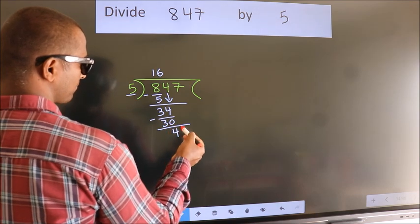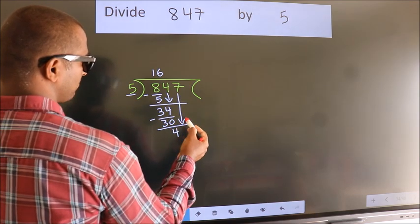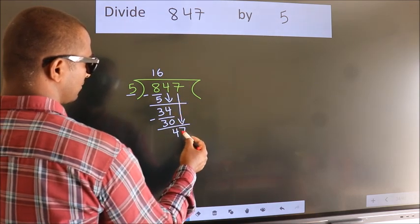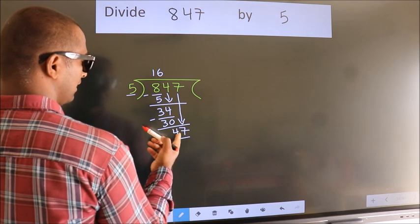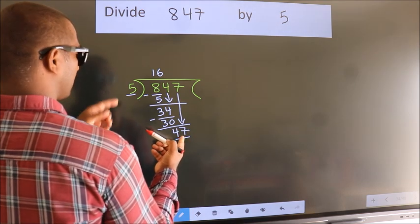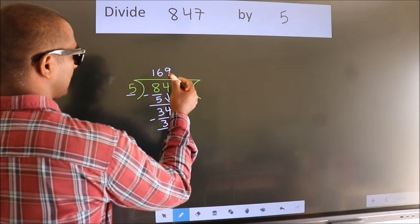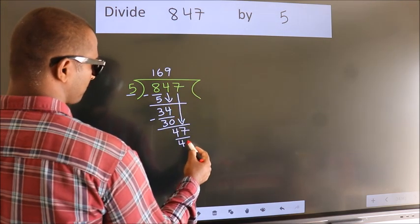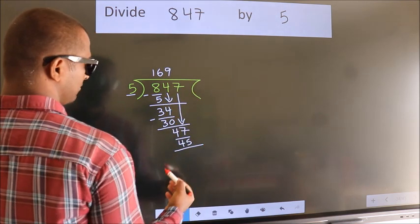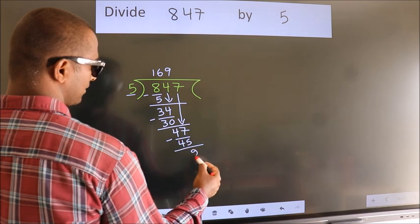After this, bring down the beside number. So, 7 down. So, 47. A number close to 47 in the 5 table is 5 times 9 equals 45. Now we subtract. We get 2.